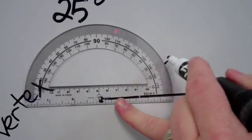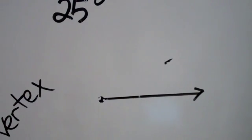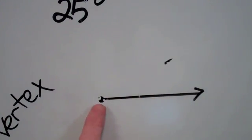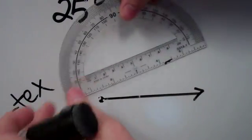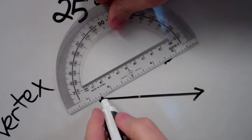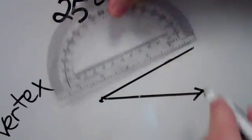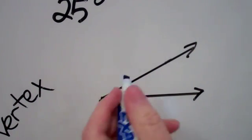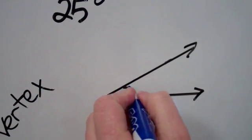Now I can move my protractor. I've got this little dot here and I'm going to connect it with the vertex using my straight edge of the protractor. There is my angle, and this little arc right here represents 25 degrees.